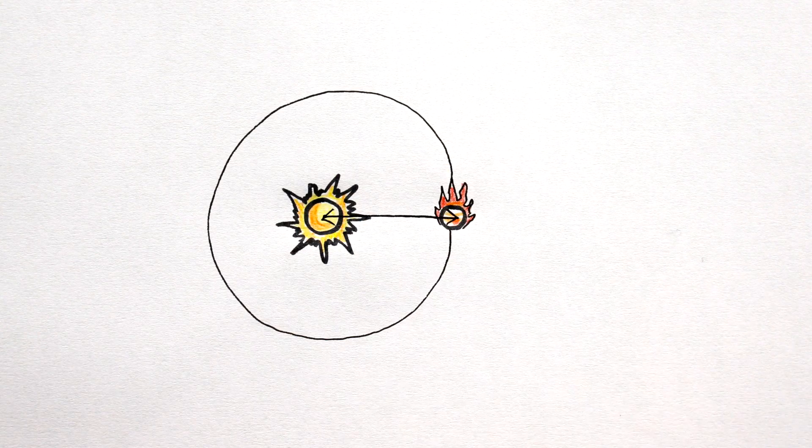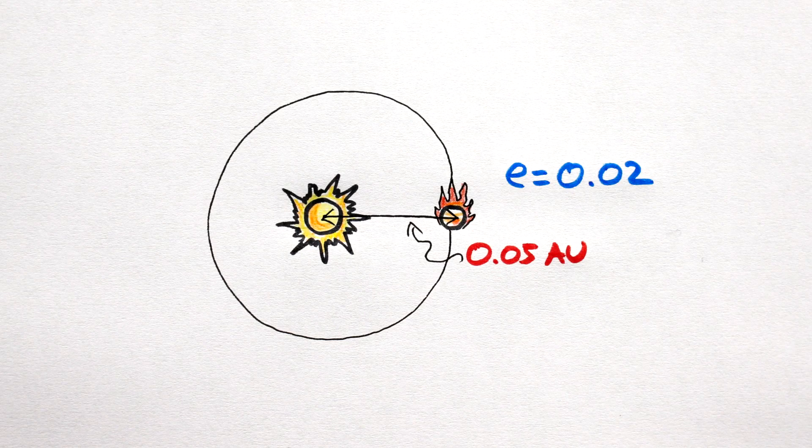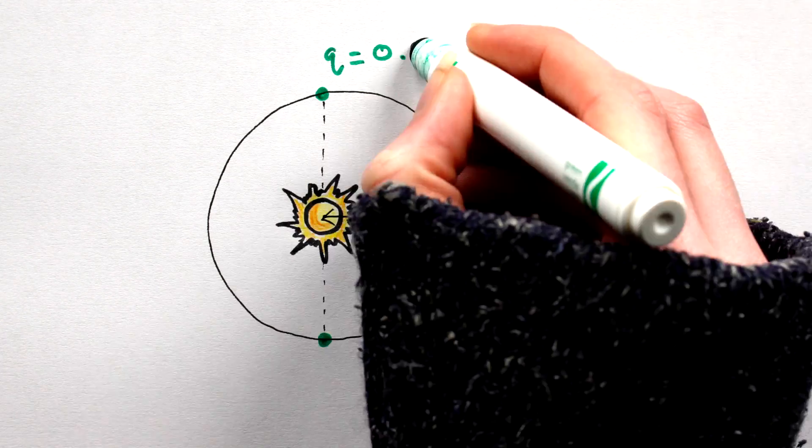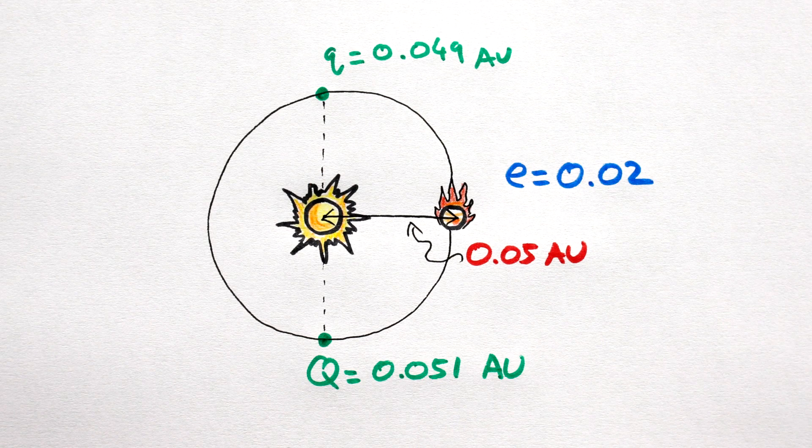So to recap, our hot Jupiter orbits its star at 0.05 AU, the eccentricity of its orbit is 0.02, and as such, the closest it comes to its star is 0.049 AU, and the furthest, 0.051 AU. Got it? Cool.